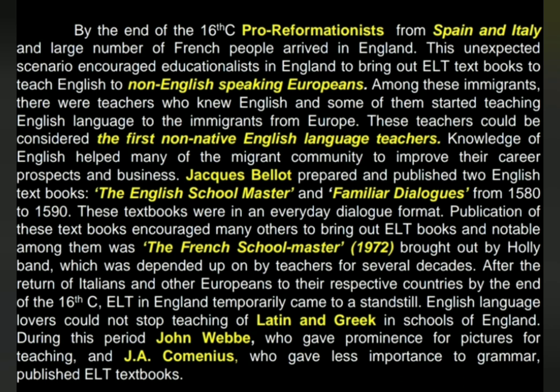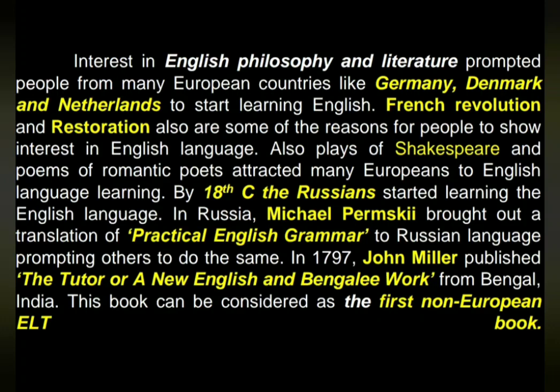By the end of the 16th century, ELT in England temporarily came to a standstill. English language lovers could not stop teaching of Latin and Greek in schools of England. During this period, John Webb, who gave prominence to pictures for teaching, and J.A. Comenius, who gave less importance to grammar, published ELT textbooks. Interest in English philosophy and literature prompted people from many European countries like Germany, Denmark, and Netherlands to start learning English. French Revolution and Restoration also are some of the reasons for people to show interest in English language. Plays of Shakespeare and poems of romantic poets attracted many Europeans to English language learning.